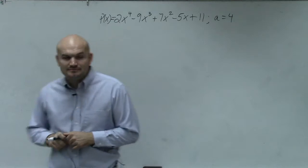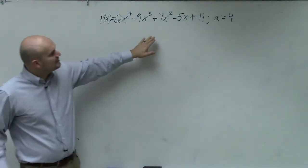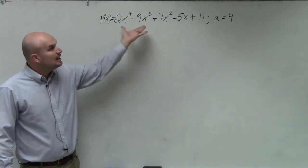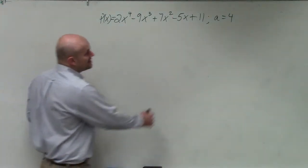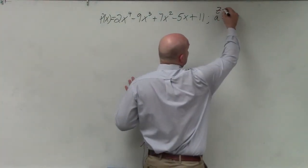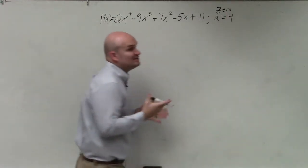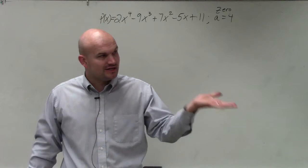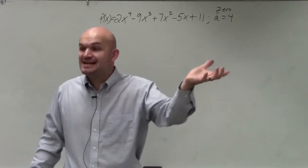All right, so in this case, ladies and gentlemen, what we're going to do is look into using the remainder theorem. And basically what the remainder theorem says is if you're given a zero, you can determine what the remainder is. And remember, if the remainder is zero, then that actually is a zero of the polynomial.